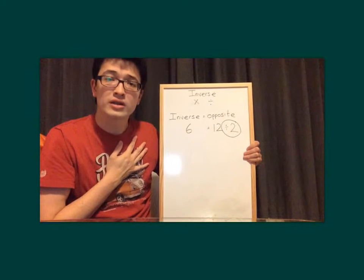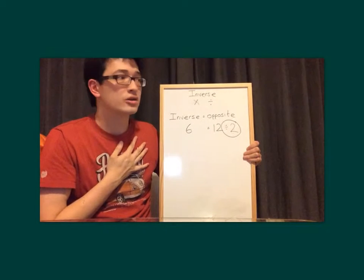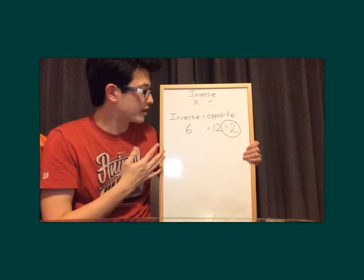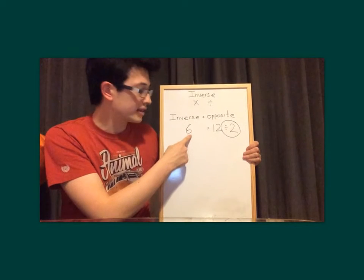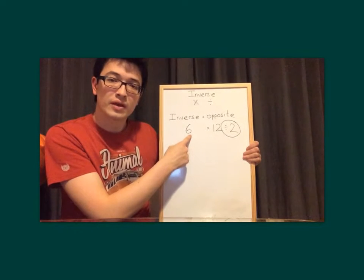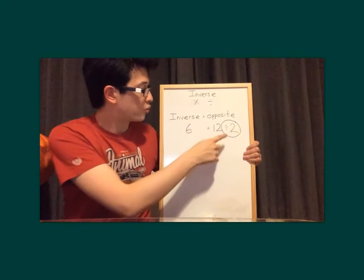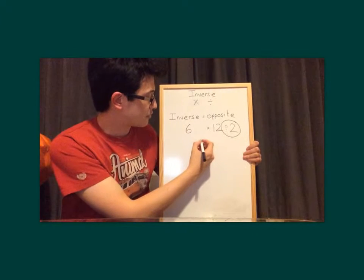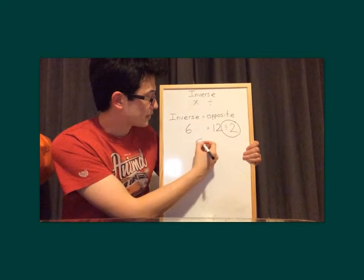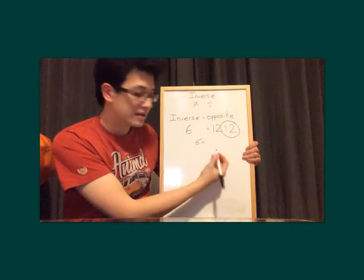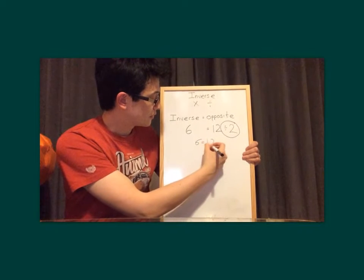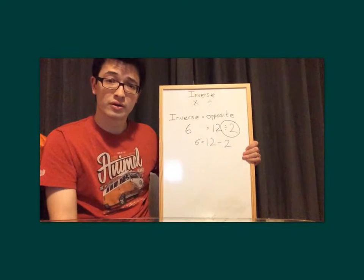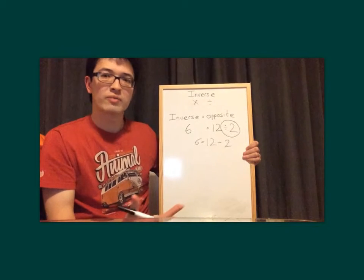We know times is the opposite of divide. So what we've got here is that 6 is the answer to 12 divided by 2. We can rewrite that to make it look a bit easier: 6 is the answer to 12 divided by 2. How amazing is that?